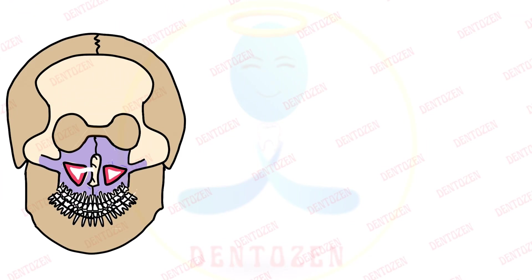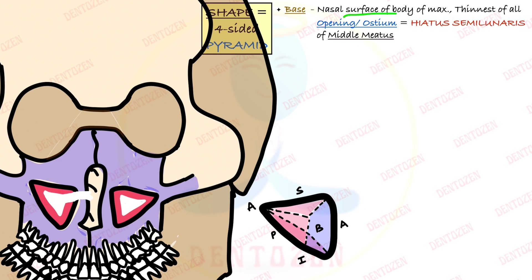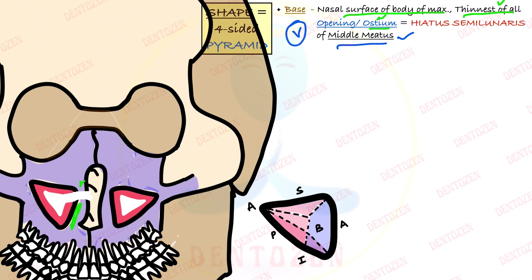The base is formed by the nasal surface of the body of maxilla and is the thinnest of all the sides. Within this side is the opening of the sinus, also called the ostium, which is in the Hiatus Semilunaris — a crescent-shaped structure in the middle meatus. Importantly, the level of this opening is actually higher than the floor of the sinus, which makes it very difficult to drain secretions or infections out of the sinus.